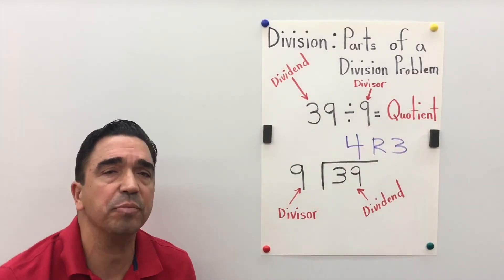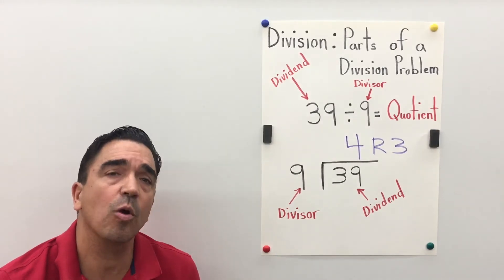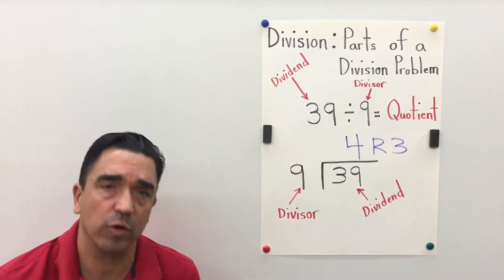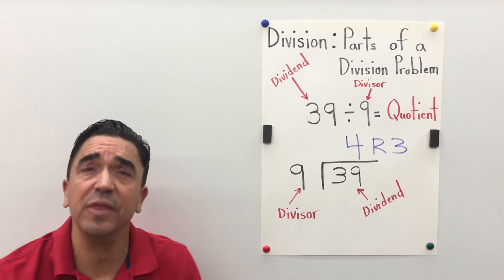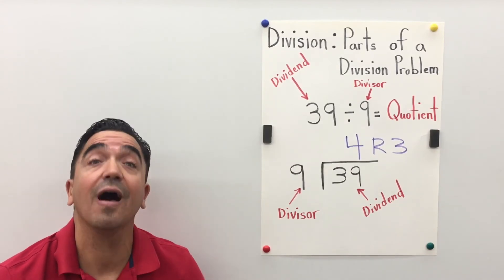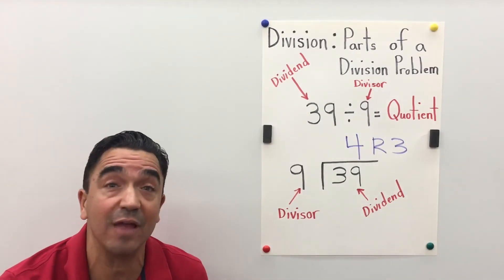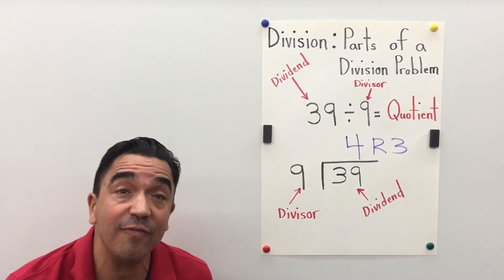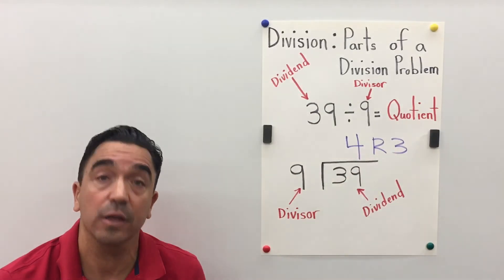Let me explain this further. 9 can go into 39 four times. That would be 36, which means we have 4 groups of 9. But we have 3 left over, and those 3 left over is the remainder.